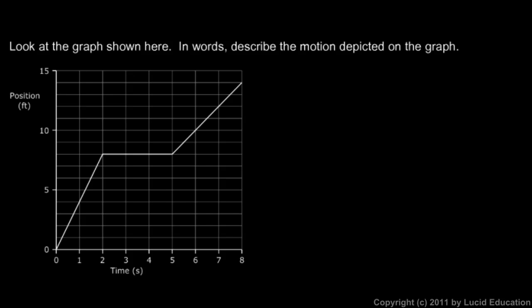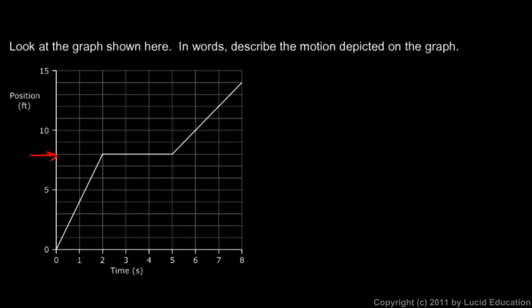Take a look at the graph shown here. We're told to describe in words the motion depicted on the graph. There are three segments. The first segment is pretty steep — during the first two seconds that means it's moving pretty quickly. A steep graph indicates faster motion on a position versus time graph: the steeper the graph, the faster the motion. It started at zero and over two seconds went up to position x equals seven feet.